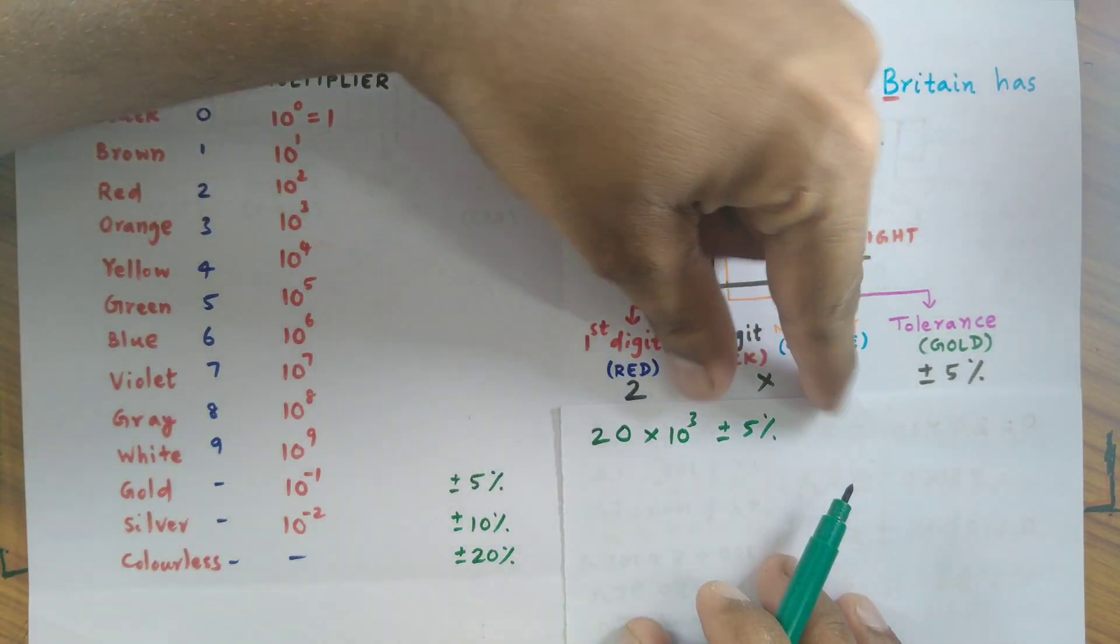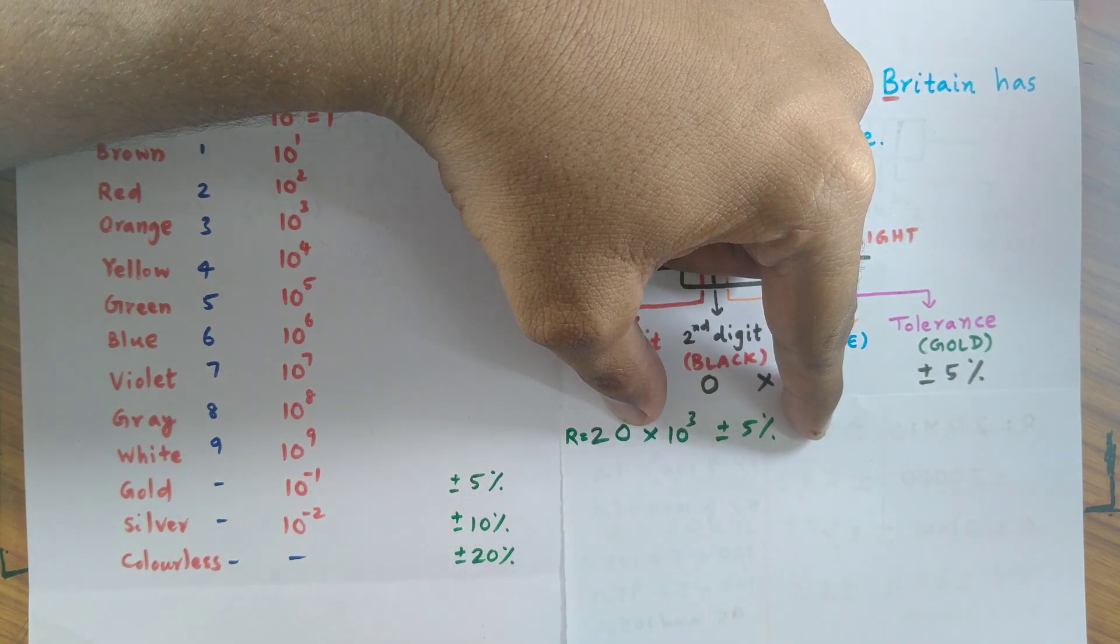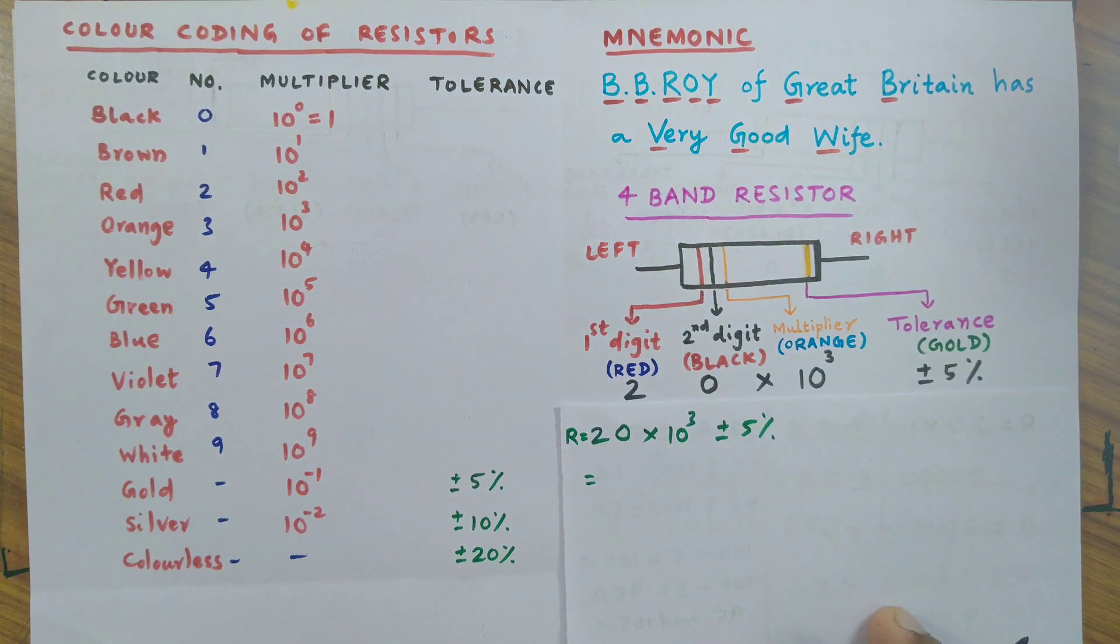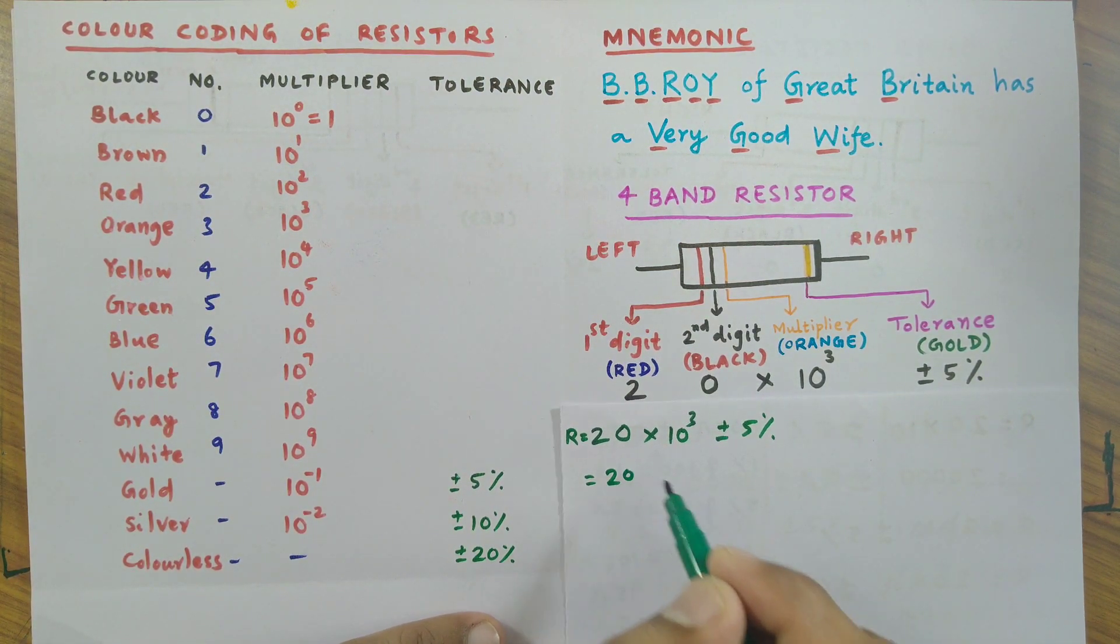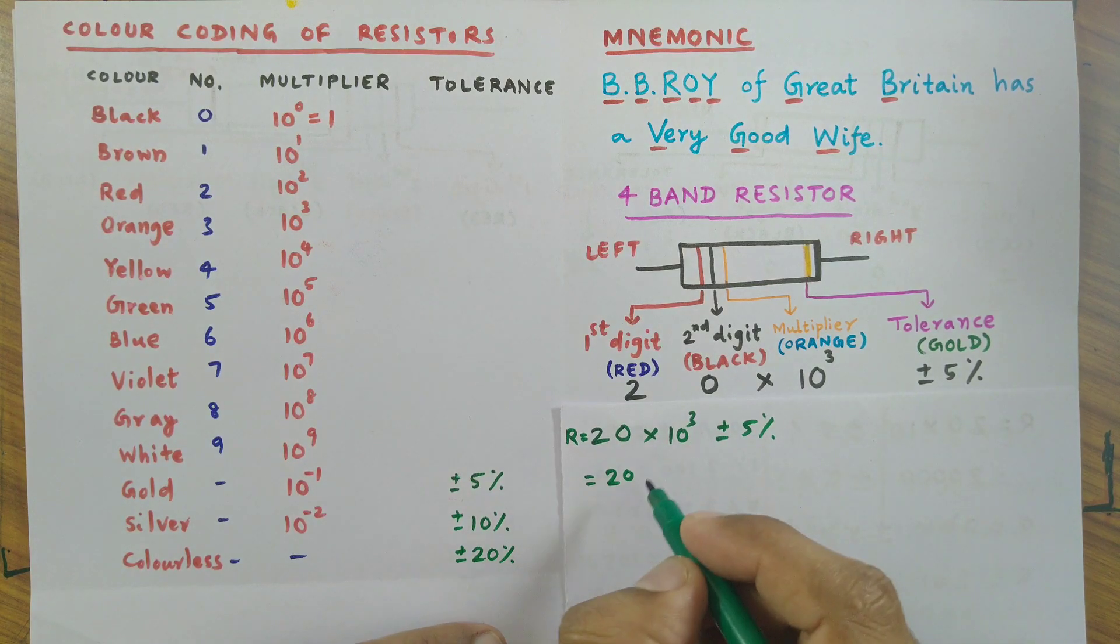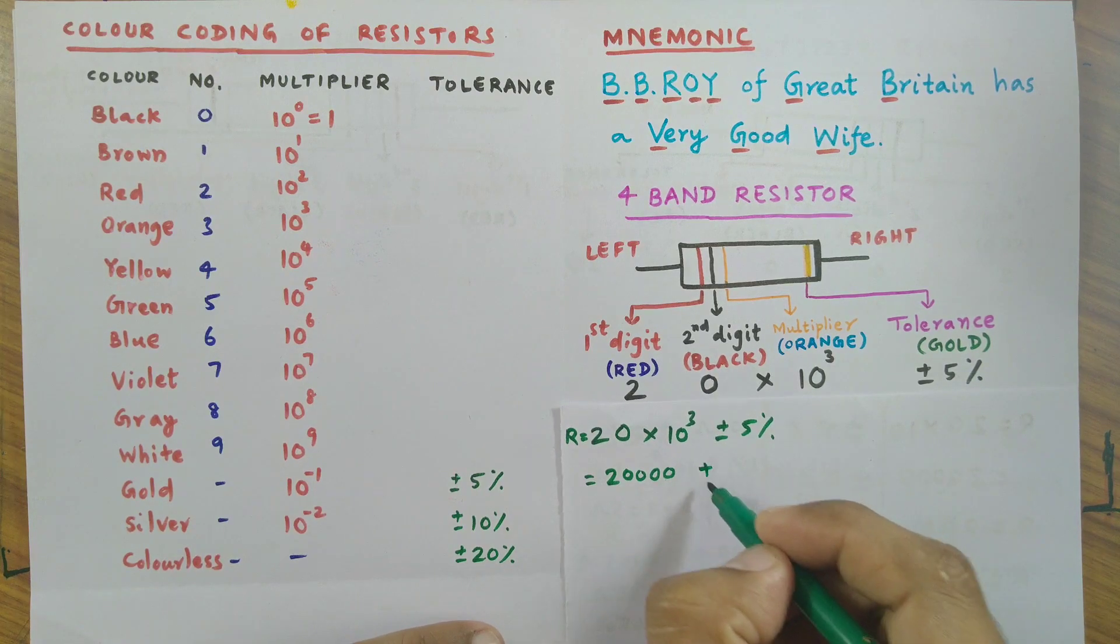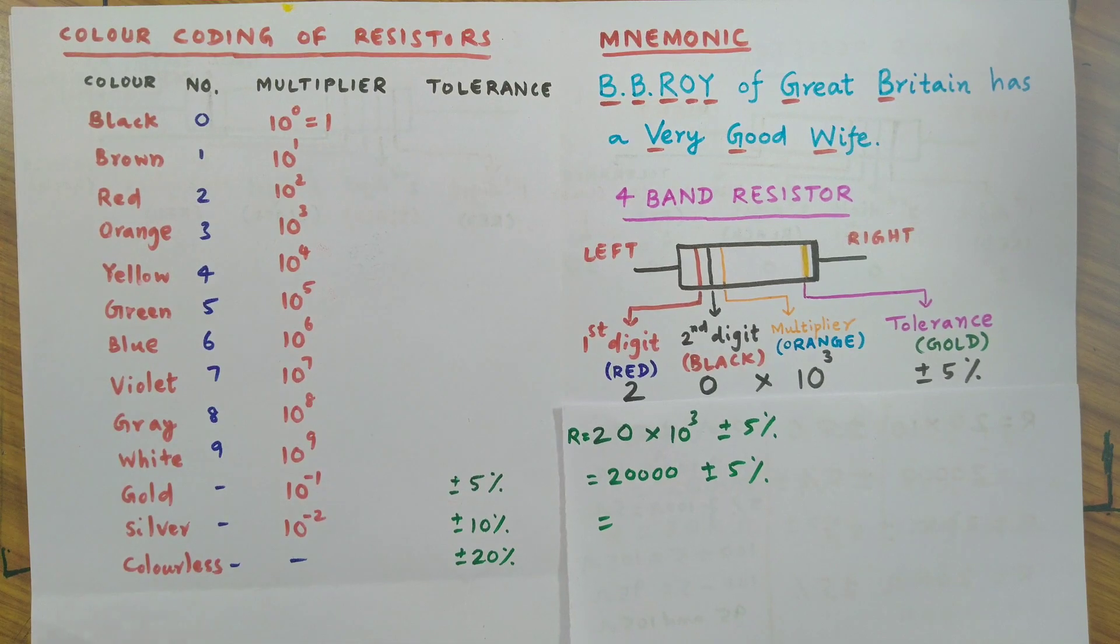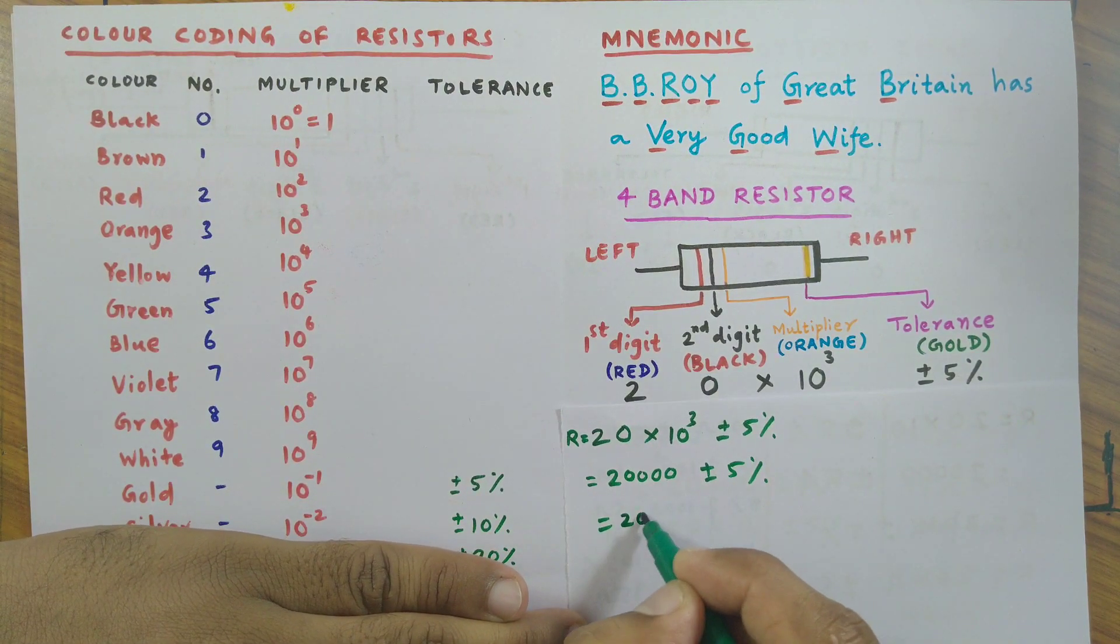Now for my convenience, I write R, that represents resistance, then equal to sign. I write 20, then for 10 to the power of 3, I write three zeros, plus or minus five percent.